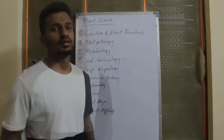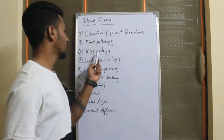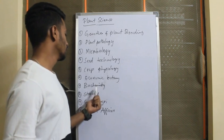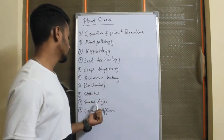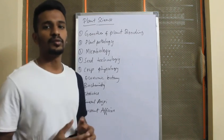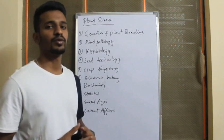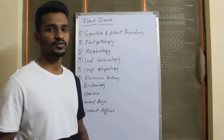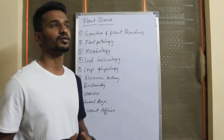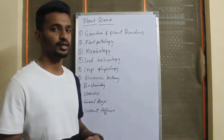All the subjects that come under the Plants syllabus are: Genetics and Plant Breeding, Plant Pathology, Microbiology, C Technology, Crop Physiology, Economic Botany, Biochemistry, Statistics, and General Agriculture and Current Affairs. About the starting four subjects, everyone will be aware of them. Coming to the minor subjects, most people will neglect them, but even though there is less weightage for minor subjects, a few questions will come from these everywhere. So you need to focus on the minor subjects too.